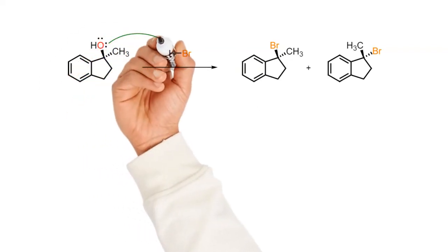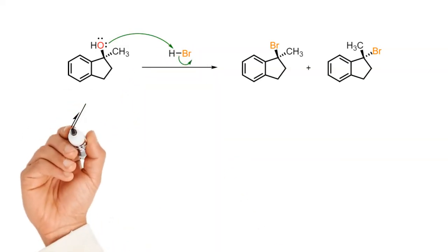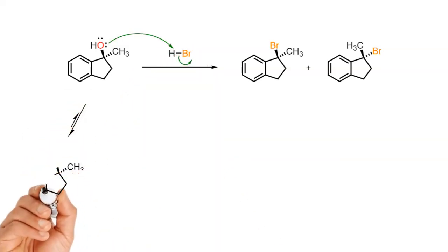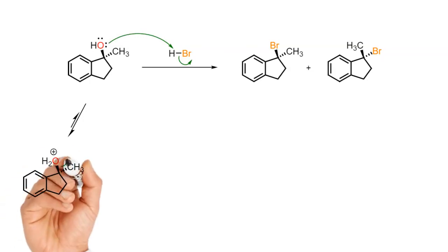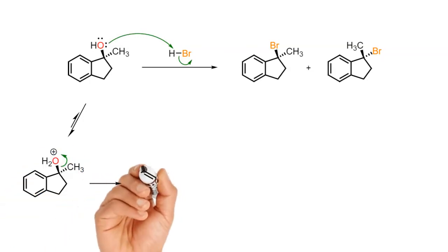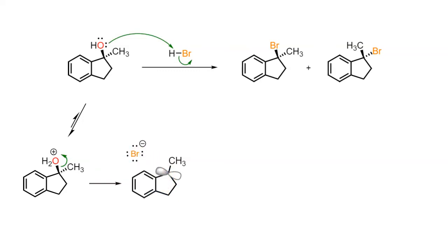Since a powerful acid is used here, the first step will be a rapid proton transfer from HBr to the alcohol oxygen in order to set up a good leaving group. The leaving group is able to break off in the rate determining step to form a planar benzylic carbocation, which is formed in the presence of bromide anion, the conjugate base from the proton transfer step.